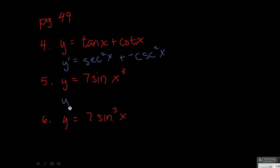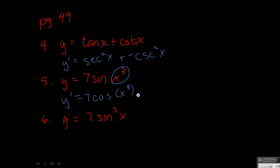On number 5, we will use the chain rule, but notice that this x cubed — it's only the x that's being cubed, not the sine. So we have basically two layers: sine is the first one, and x cubed will be the second thing we take the derivative of. The 7 stays out front, derivative of sine is cosine, and then we have x cubed, and then we multiply by the derivative of the inside, which is 3x squared. You could rewrite this as 21x squared cosine x cubed.